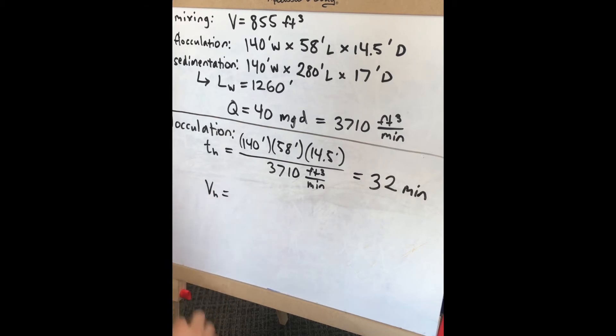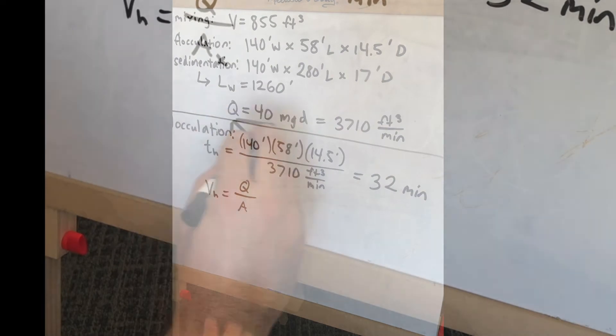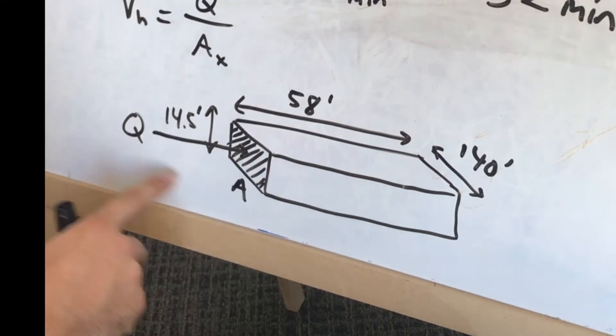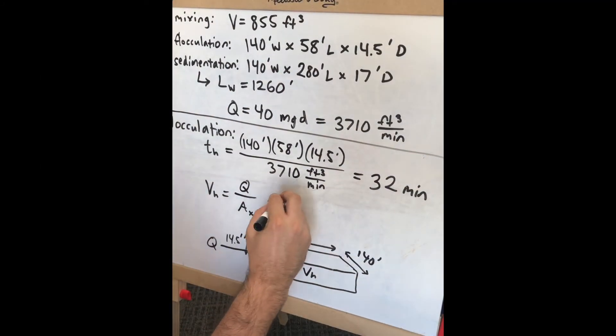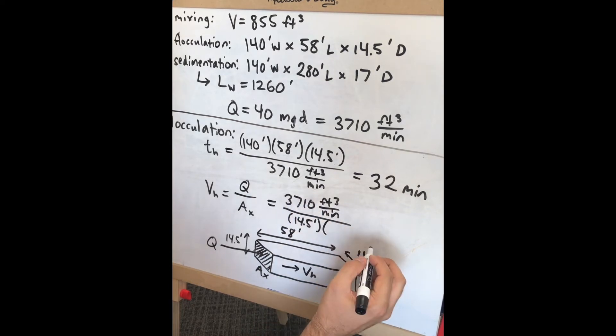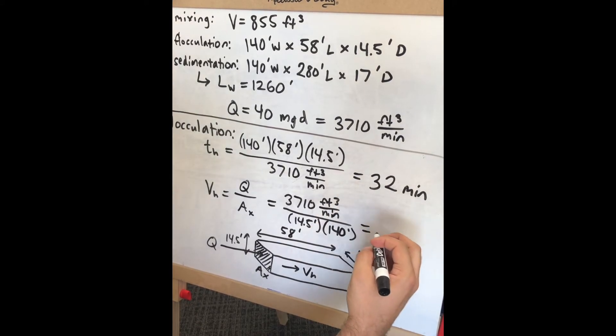For horizontal flow velocity, calculate the flow rate divided by the cross-sectional area. With a flocculation basin depth of 14.5 feet and width of 140 feet, we get 1.8 feet per minute.